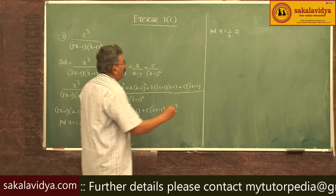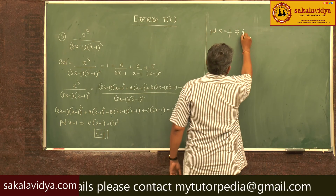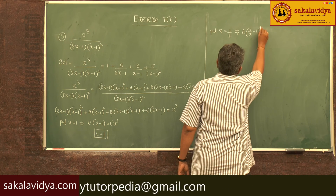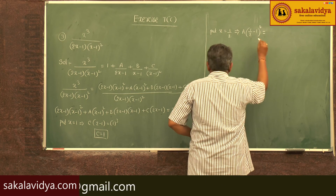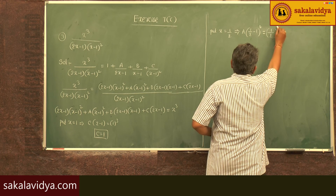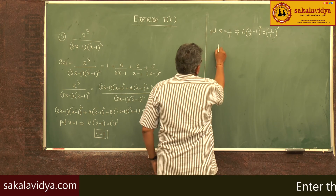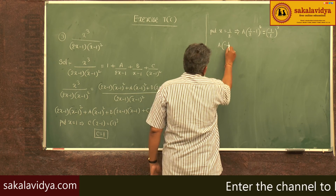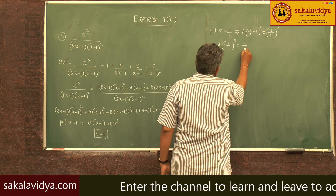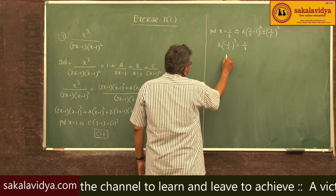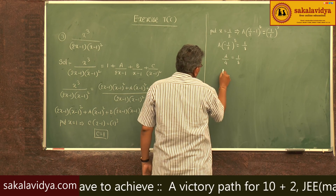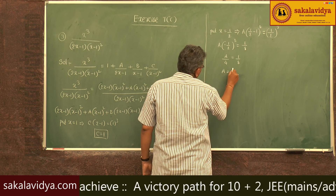Substituting x equal to 1 by 2, we get A of (1 by 2 minus 1) whole square equals (1 by 2) whole square equals 1 by 8. This gives A by 4 equals 1 by 8, so A equals 4 by 8, which means A equals 1 by 2.